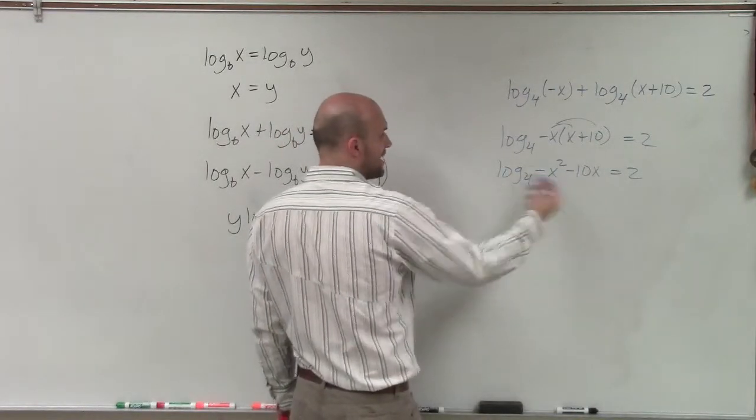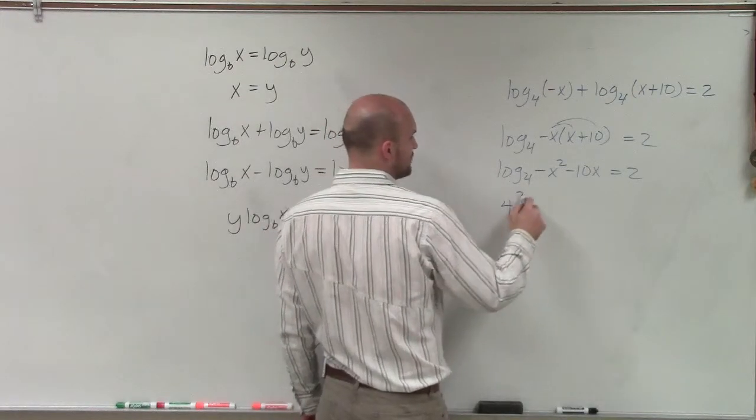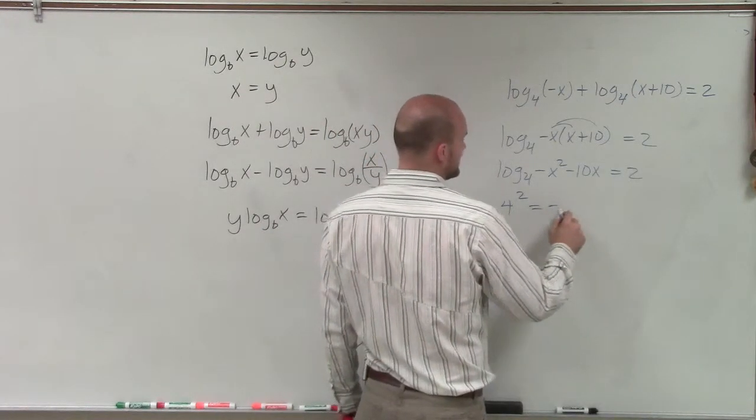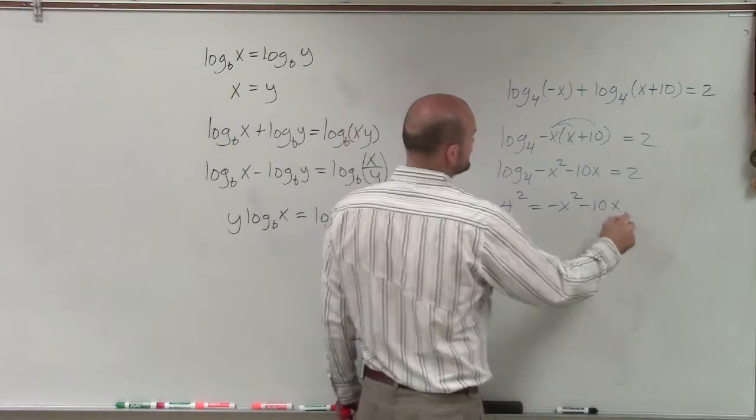Then the next thing is now I can convert this to exponential form. So it's 4 squared equals negative x squared minus 10x.